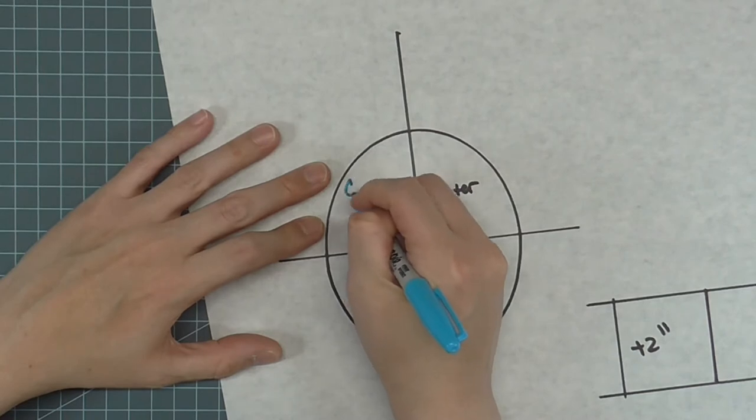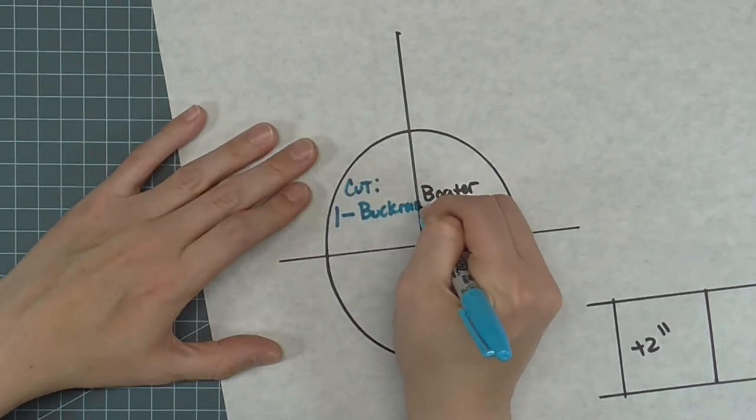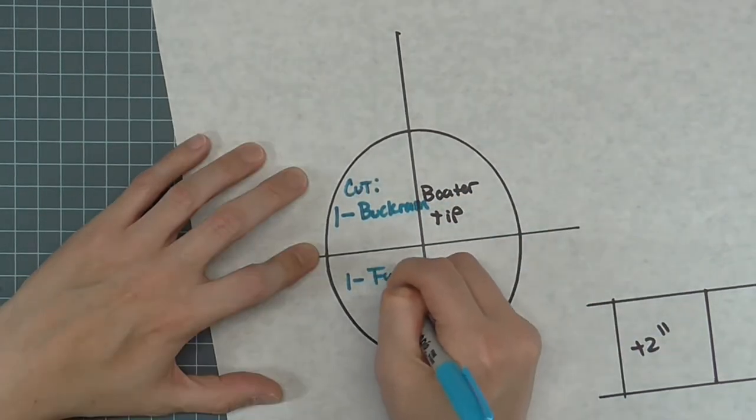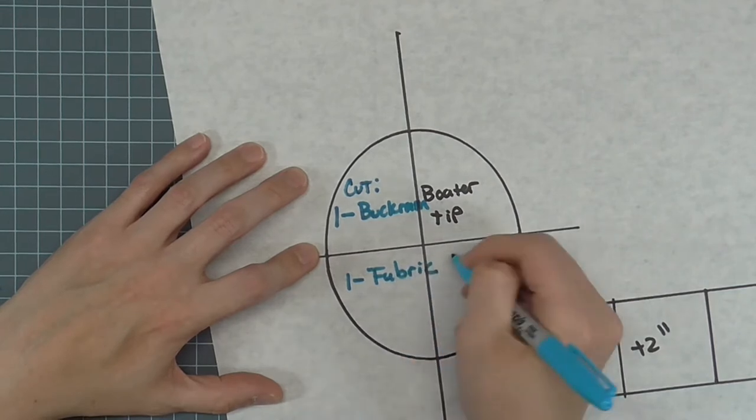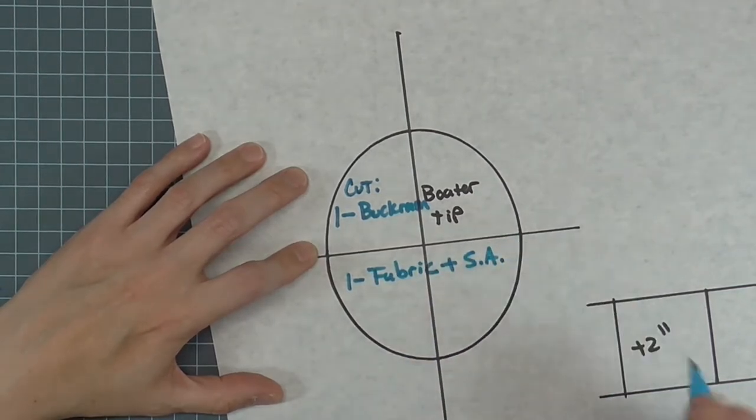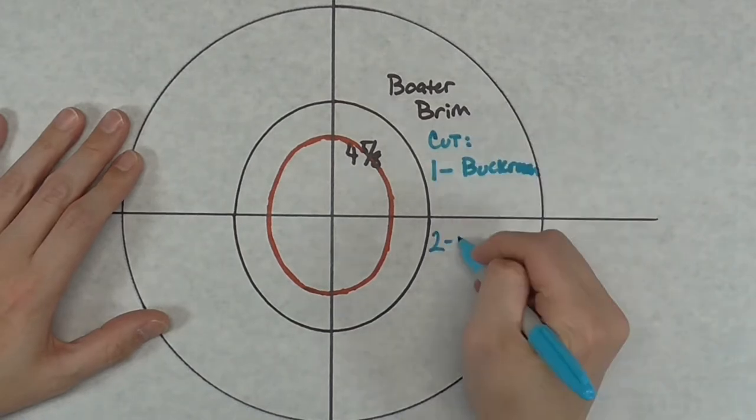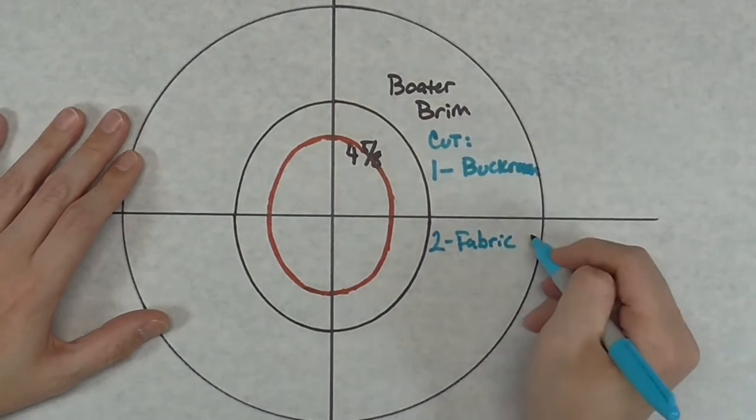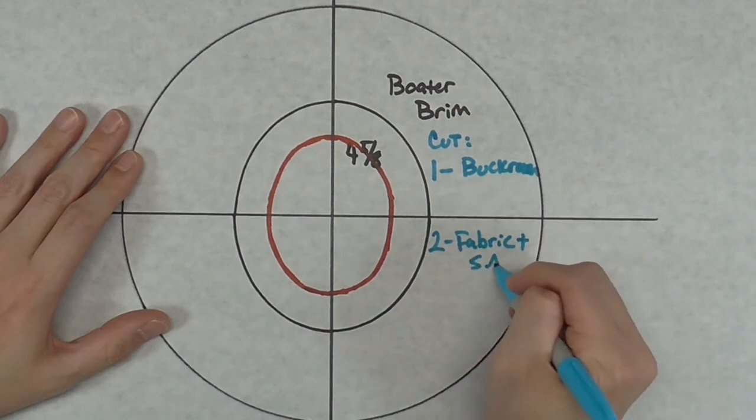Note on the pieces the cutting instructions. For the tip, cut one of buckram and one of fabric with an added seam allowance. On the brim, you will cut one of buckram including the inside seam allowance, and two of fashion fabric also including the inside seam allowance.